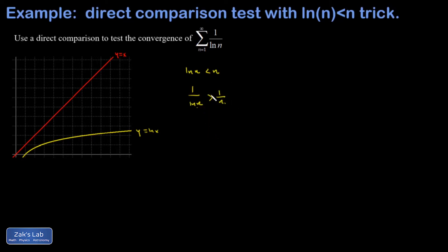That means that the terms of this series are greater than the terms of the series of one over n. That's the divergent harmonic series, so that would prove this thing diverges. Let's shore things up by actually proving that this statement is true.